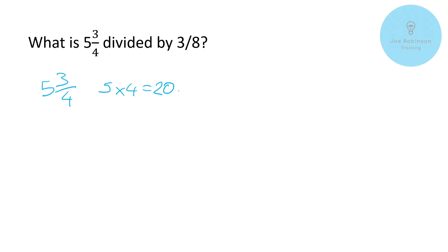We add that result onto the numerator: 20 plus 3 gives us 23. We put that on top of our fraction, giving us an improper fraction of 23 over 4. Just bear in mind that 23 over 4 represents exactly the same amount as five and three quarters — we've just put it in a different format to help us with the next stage of the calculation.